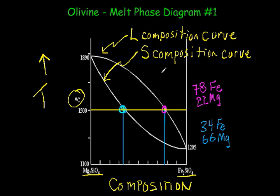Now, the last thing that we need to do is to label what are called the fields of the diagram. I'll just go to another color, I'll go to green. So we refer to the field above the liquid composition curve as the liquid field, and we label that with a L for liquid.